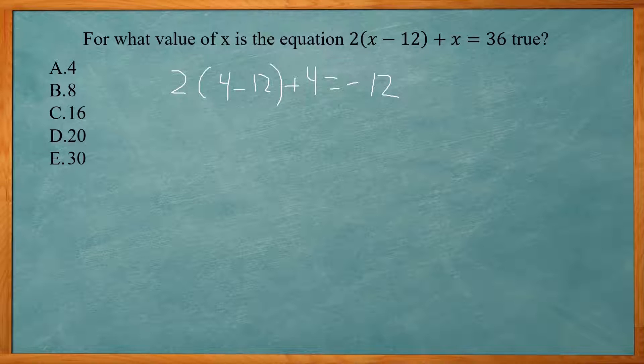Now if you're using a TI-83-84 calculator, you can just do second enter, and that will bring this back up where you can just change the 4 into 8. So you end up with 2 times 8 minus 12 plus 8. So that saves you some time, and you get 0. So it doesn't equal 36 yet, so those two answers are not correct.